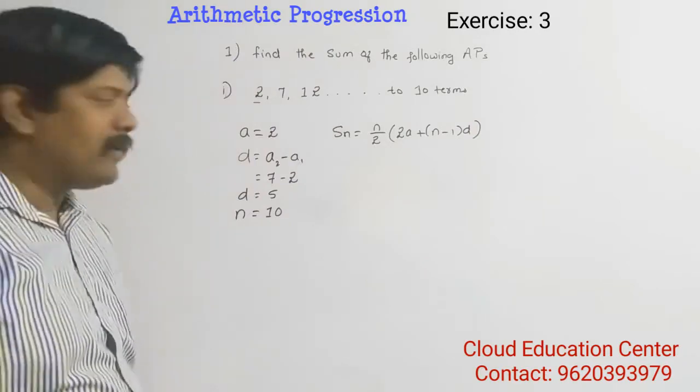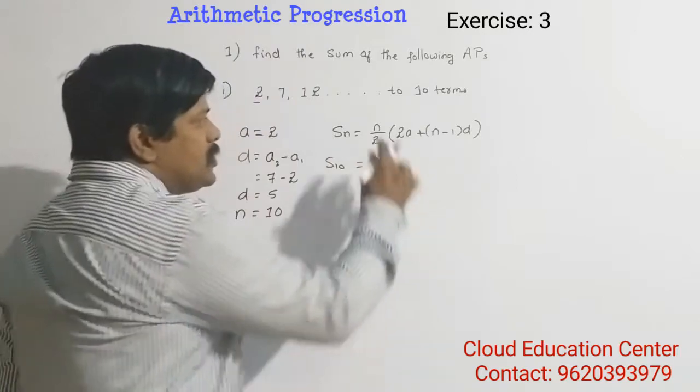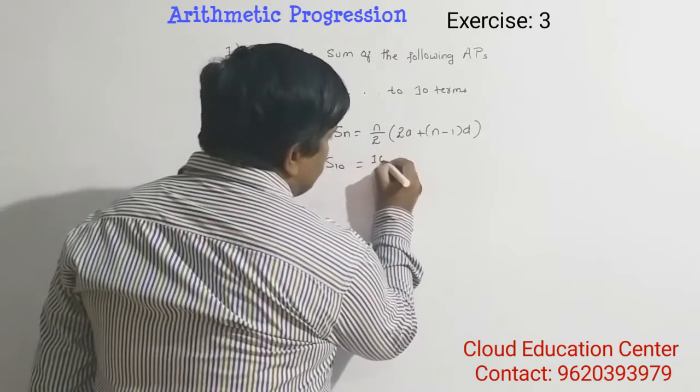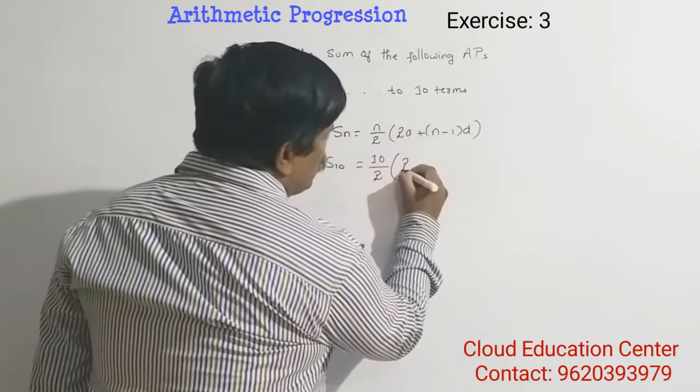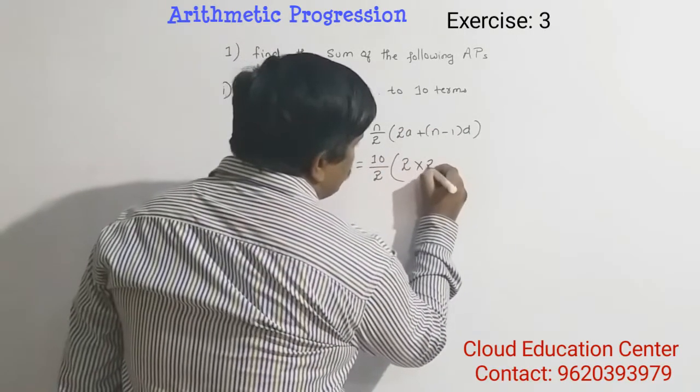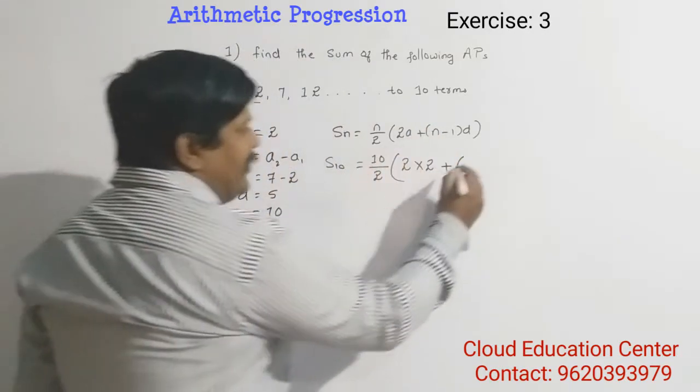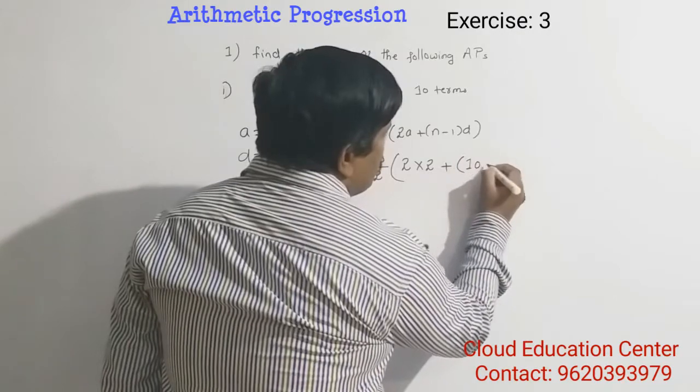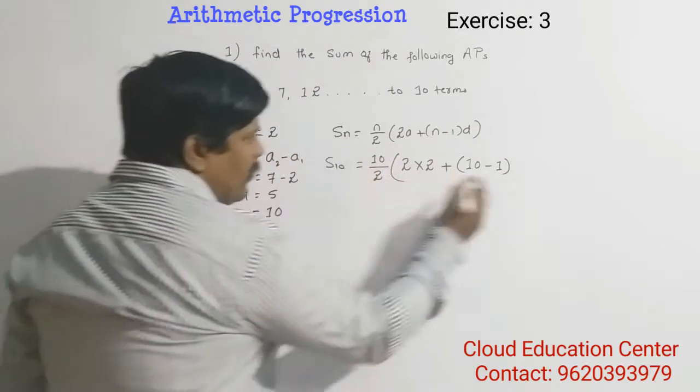Okay, now, how many terms we wanted? Yes, 10. So S_N is 10 by 2, and it is 2 into A, A is 2, plus N, N is nothing but 10, minus 1, and D is nothing but 5.